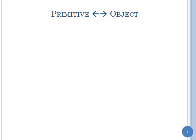So: we can't convert an object to another object. We can convert a primitive to a primitive. But can we convert a primitive to an object, or an object to a primitive?